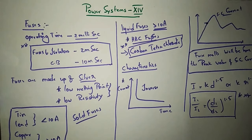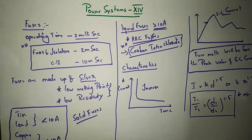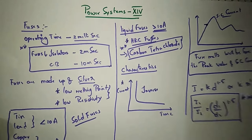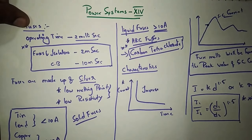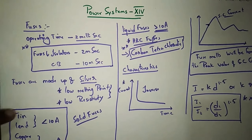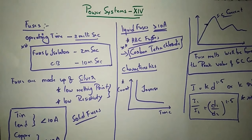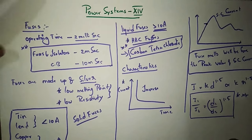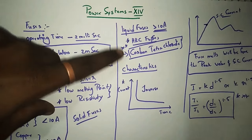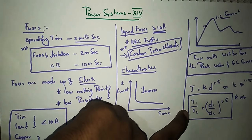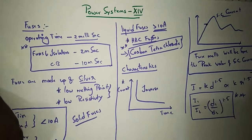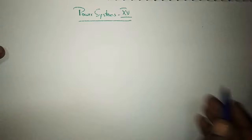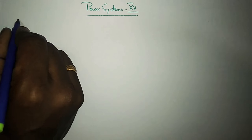Hello everyone, welcome to EVO Electrics. This is Srigan here. In the previous class we have been discussing about power resistance part 14, about fuses and their characteristics and different types of materials used for making fuses depending upon their current characteristics. We have seen about liquid fuses and their characteristics and the important formulae used for fuses. Today we are going to deal with power resistance part 15 and types of relays.